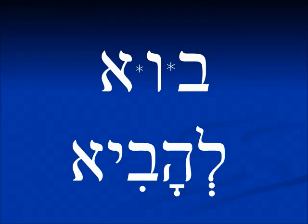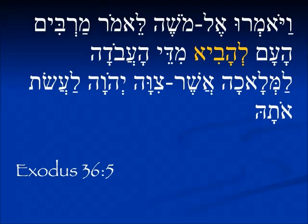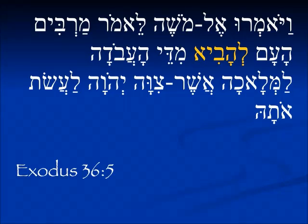When we bring the hollow verb into the Hifil, we have the He, we lose the middle letter, but we have the Yud of the Hifil. So Bo in Hifil: le'havi, to bring. From Exodus 36:5: Ve'yomru el-Moshe lemor, marbim ha'am la'havi midei ha'avodah l'malachah, asher tziva Yehovah la'asot ota — they said to Moses, the people are bringing too much for the work. Although this appears as an infinitive in Hebrew, the people are a lot to bring — too much for the work. Marbim is a present tense verb, and le'havi is the infinitive to bring.